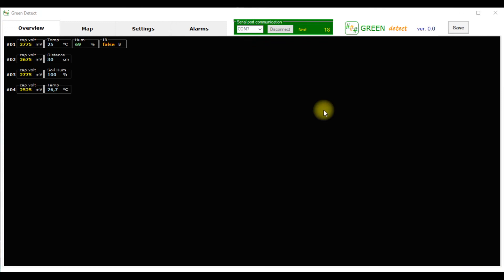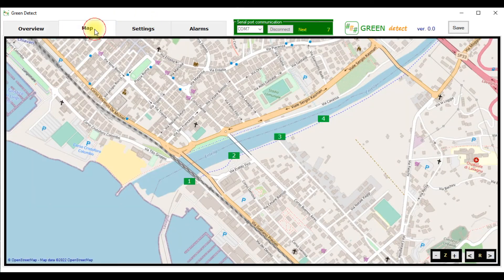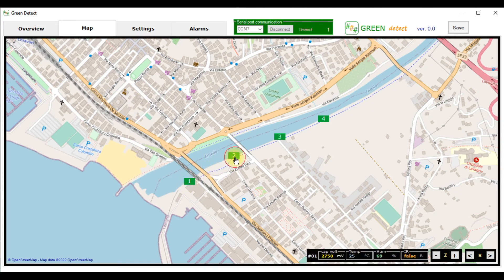By the overview page you can view the measured data of each sensor in the network. The map page displays the status of all the sensors positioned on the geographic map. The map can also work offline. Internet connection is required only in the first setting phase.